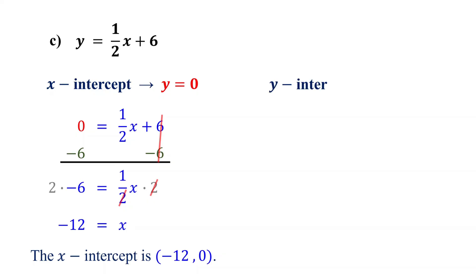To find the y-intercept, set x to 0 and solve for y. This simplifies to y equals 6. So, the y-intercept is the point (0, 6).